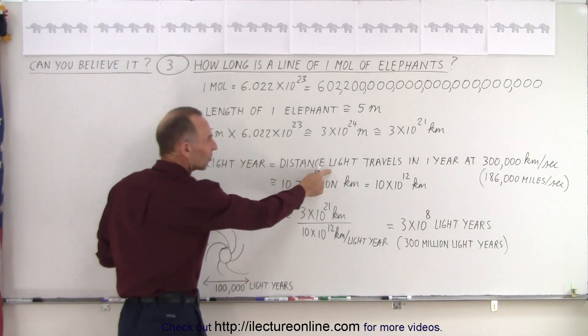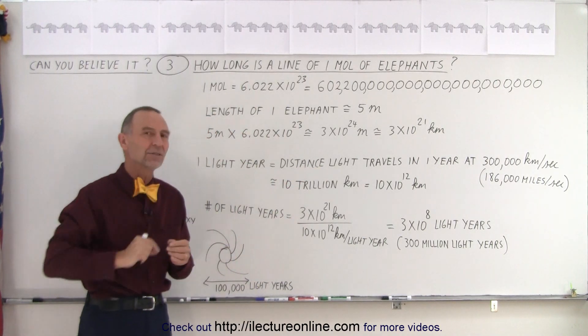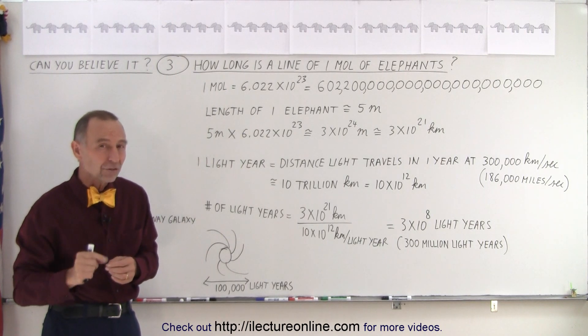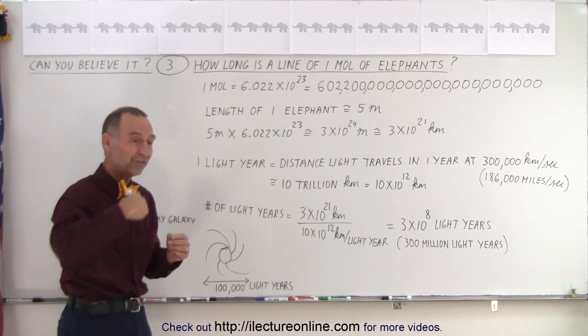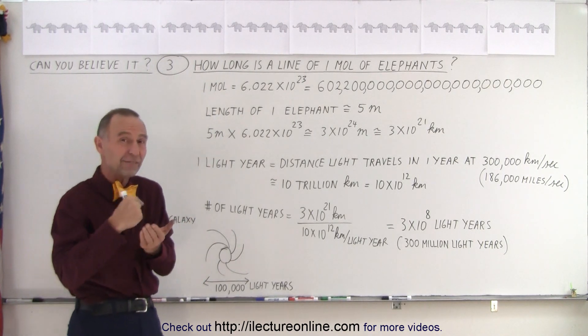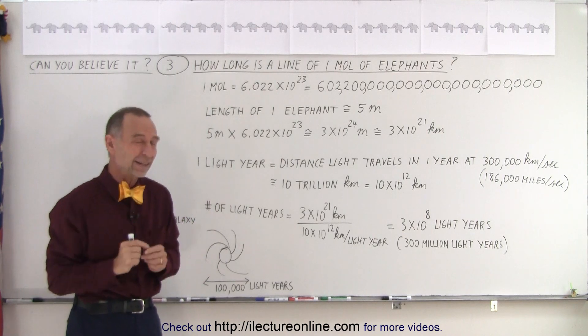A light year is the distance light travels in a single year. Light travels at 300,000 kilometers in a single second, which is seven and a half times around the world in a single second.